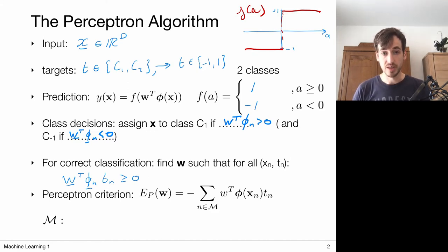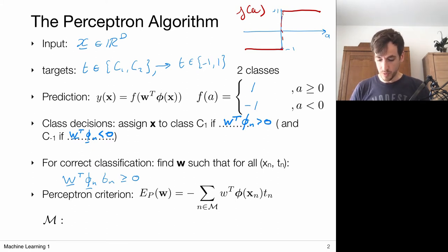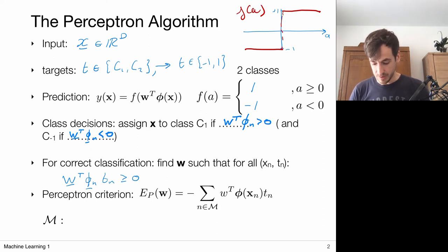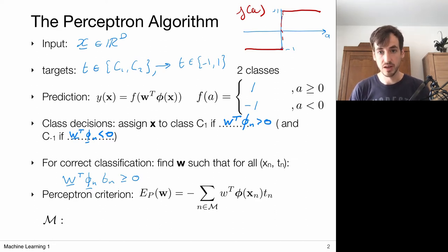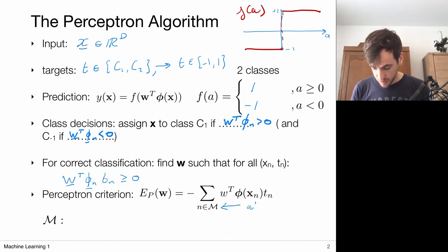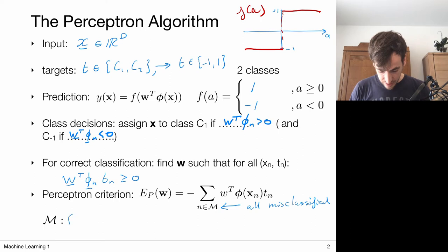With this in mind, we can formulate the perceptron criterion — an error that we want to minimize. When this is negative, we want to minimize it. So I'm going to sum over all my negative criterion values, over all my errors, essentially for all data points which were misclassified. Because if they were classified correctly, there's no reason to update the W's. This set M indicates all misclassified data points — formally, the set of all indices N for which this criterion evaluates to a negative value.